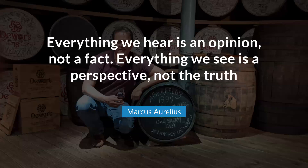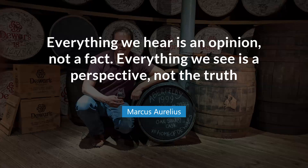Marcus Aurelius was an emperor in the Roman Empire, and he already said it: everything we hear is an opinion and not a fact, and especially everything we see is perspective and not the truth. The same goes for when we look at microservices. There are many people at presentations talking about microservices or services and implementing them in many different ways. As we saw in the Amazon Prime example, they started using microservices and serverless, and eventually thought it was a bad idea because they couldn't scale and had additional issues.